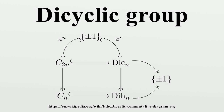In group theory, a dicyclic group is a member of a class of non-abelian groups of order 4n. It is an extension of the cyclic group of order 2 by a cyclic group of order 2n, giving the name dicyclic. In the notation of exact sequences of groups, this extension can be expressed as. More generally, given any finite abelian group with an order 2 element, one can define a dicyclic group.